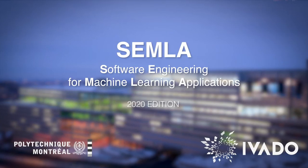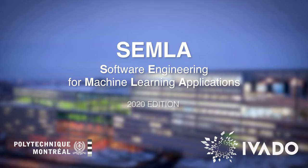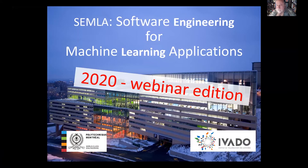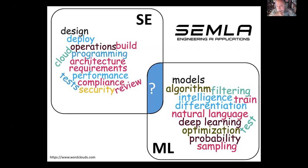Welcome everyone to the fourth day of Semla webinars, Semla going virtual. Thank you very much for joining us again for another exciting talk. For those of you joining for the first time, Semla works at the cross-section between software engineering and machine learning. The basic argument is that building and training models is very different from implementing them in software and putting them in real-life applications. We're exploring issues and challenges in the development of machine learning applications.